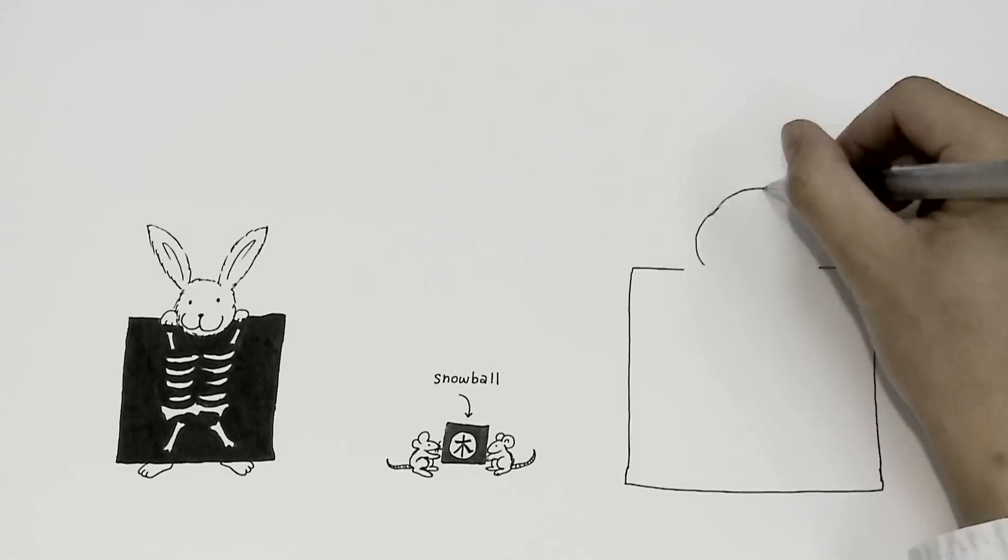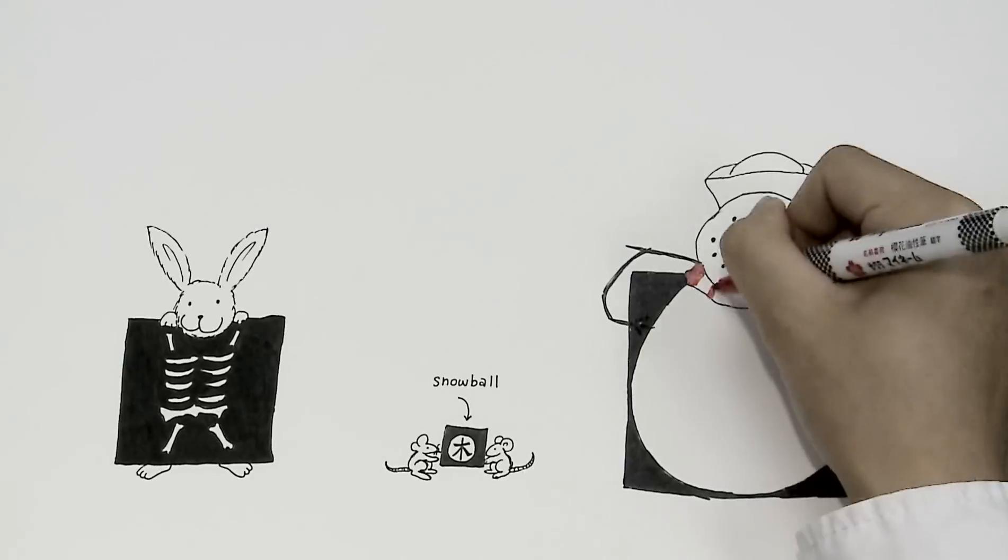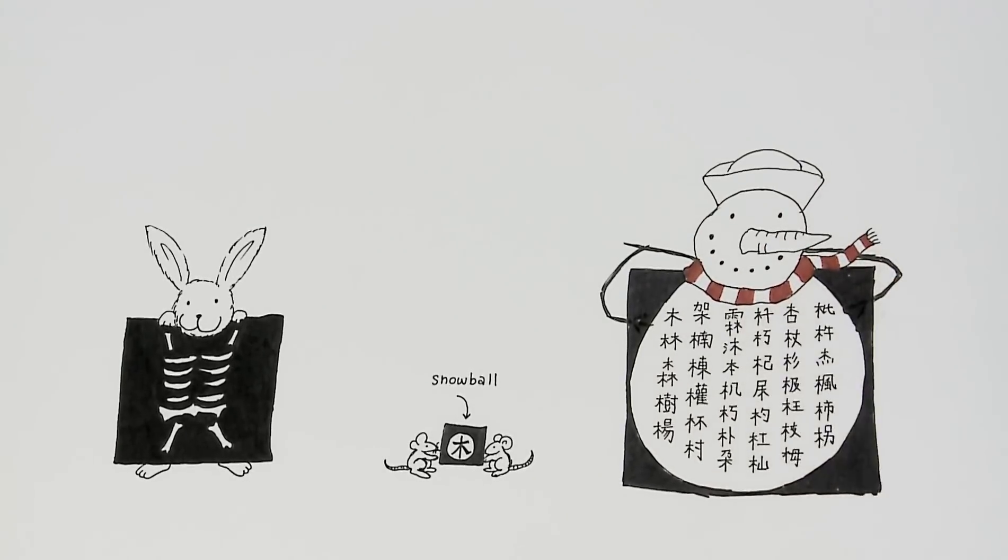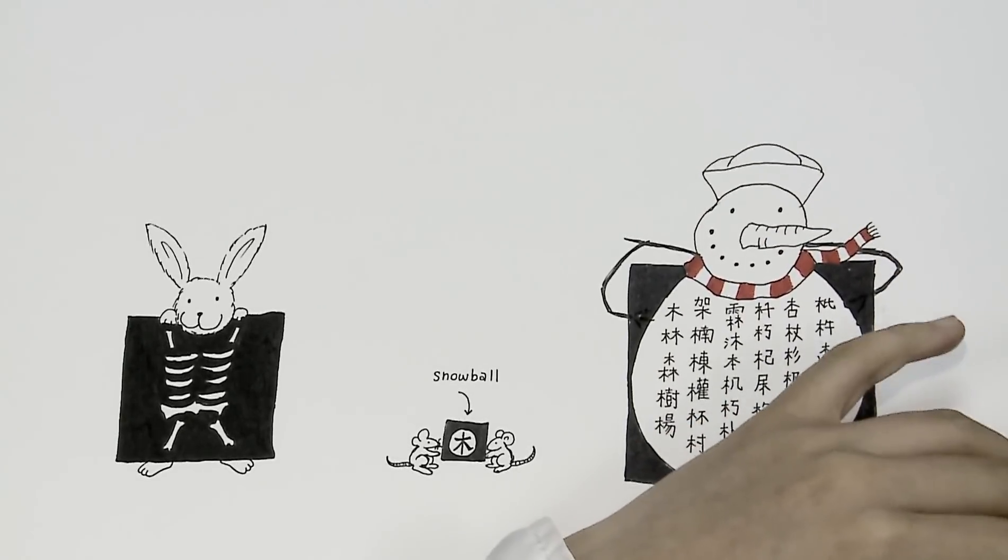As you learn these pictographic components, you will quickly reach a critical mass where suddenly all the pieces fall into place and you will begin to learn whole Chinese characters exponentially fast.